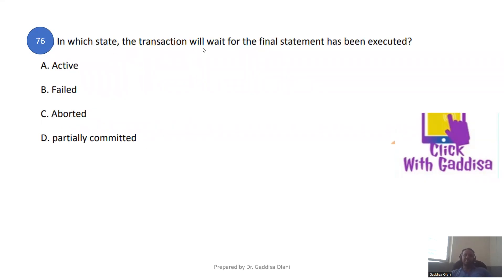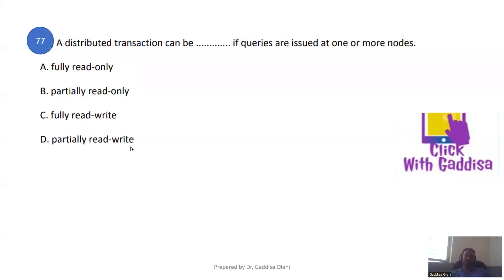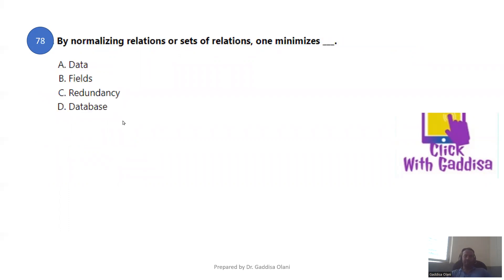The state in which a transaction waits after the final statement has been executed is called partially committed. A distributed transaction can be executed if queries are issued at one or more nodes. By normalizing relations, one can minimize data redundancy.